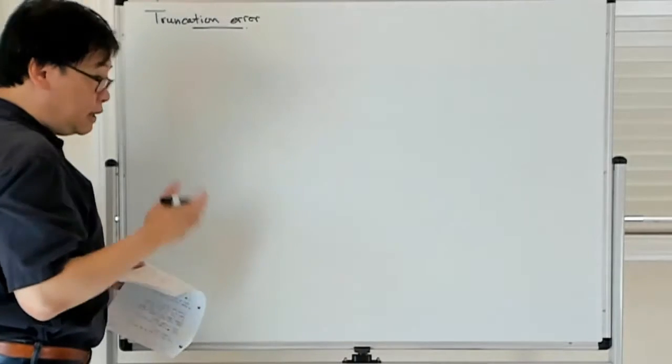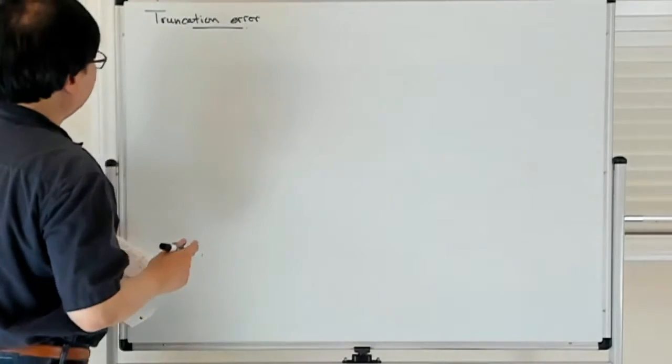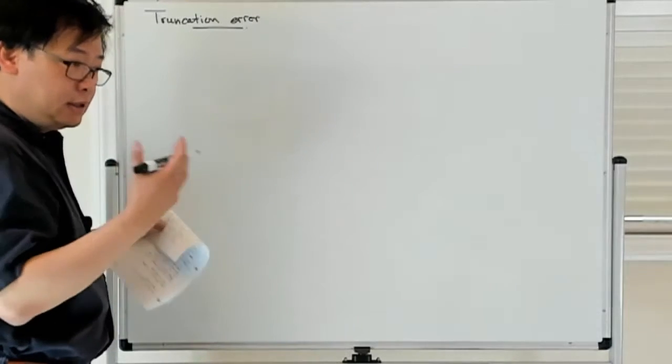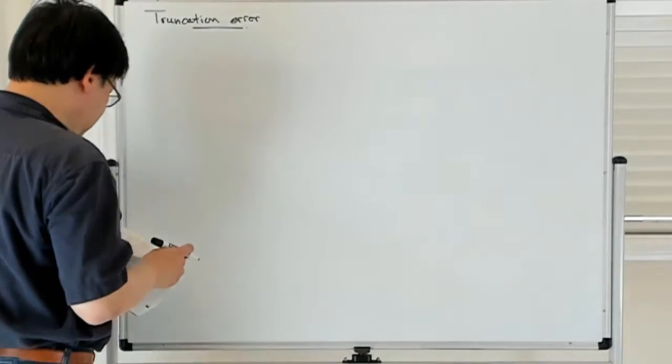So what happens, as the name implies, is that truncation error arises when you replace some sort of infinite series with some sort of finite series.